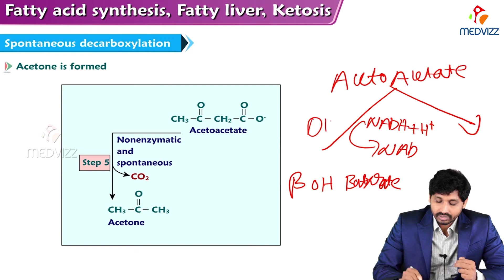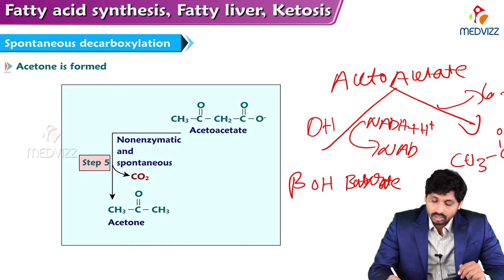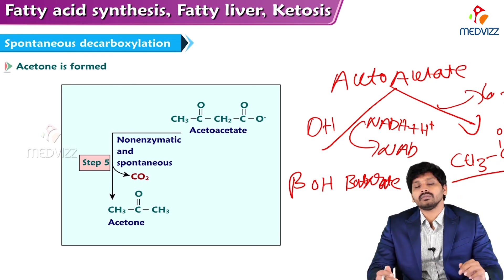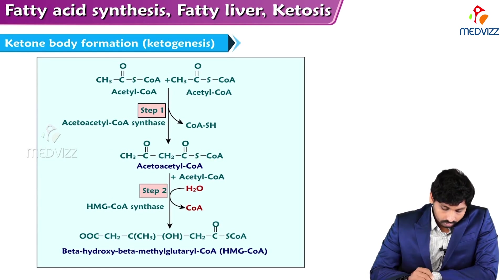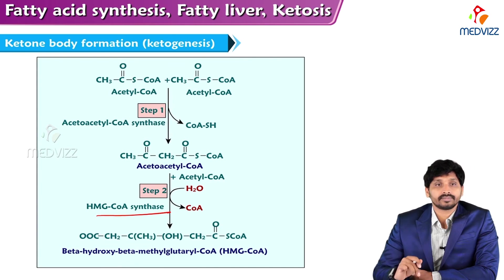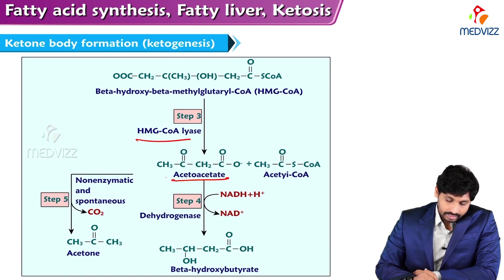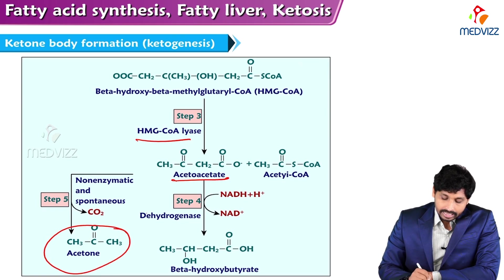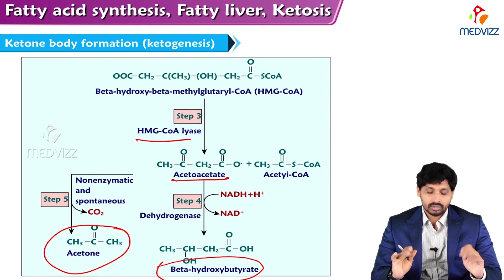In a second route, acetoacetate non-enzymatically and spontaneously loses carbon dioxide and is converted to acetone (CH₃COCH₃), which is then expelled through the lungs during respiration. To summarize: step one uses acetoacetyl CoA synthase, step two uses HMG CoA synthase, and step three uses HMG CoA lyase. Acetoacetate is the central ketone body — from it, beta-hydroxybutyrate is formed enzymatically and acetone is formed non-enzymatically.